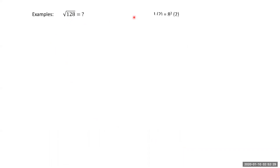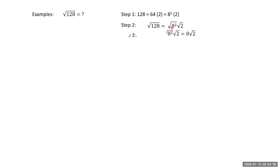For root of 128: the largest perfect square factor is 64, because 128 ÷ 2 = 64, and 64 = 8². Apply the product rule: root of 64 × 2 = root of 64 × root of 2 = 8 root 2. So 8 root 2 is the simplified answer.